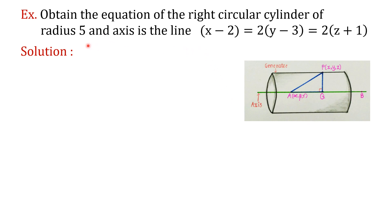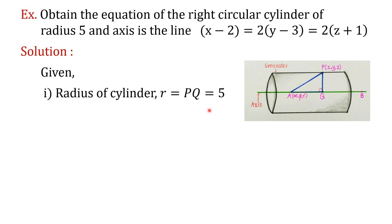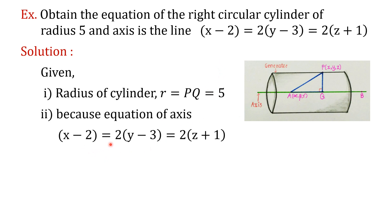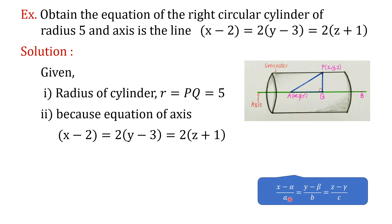The radius of the cylinder is 5. PQ, which is the constant distance, is the radius, so PQ equals 5, and R equals PQ equals 5. Next, we want to obtain the direction ratios for the axis AB. The equation of the axis is x minus 2 equal to 2 into y minus 3 equal to 2 into z plus 1. We want to express it in symmetrical form.